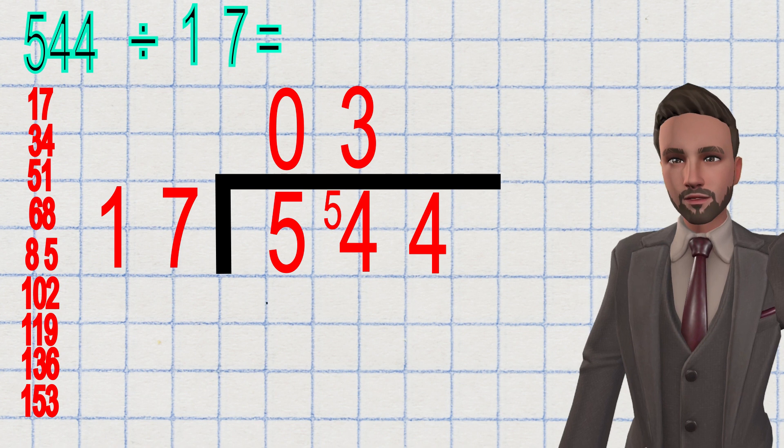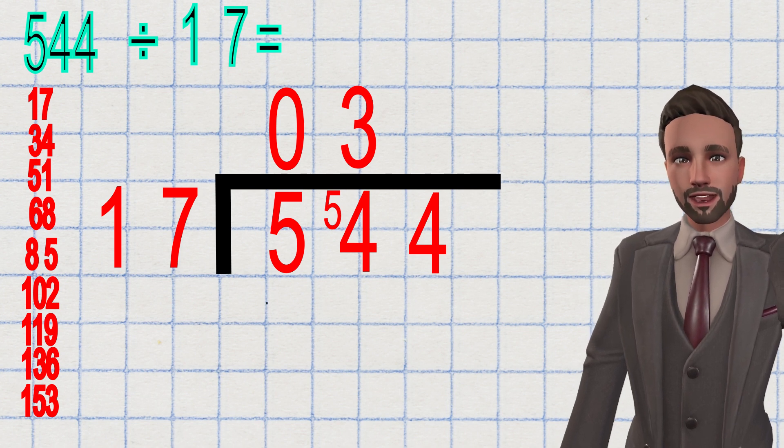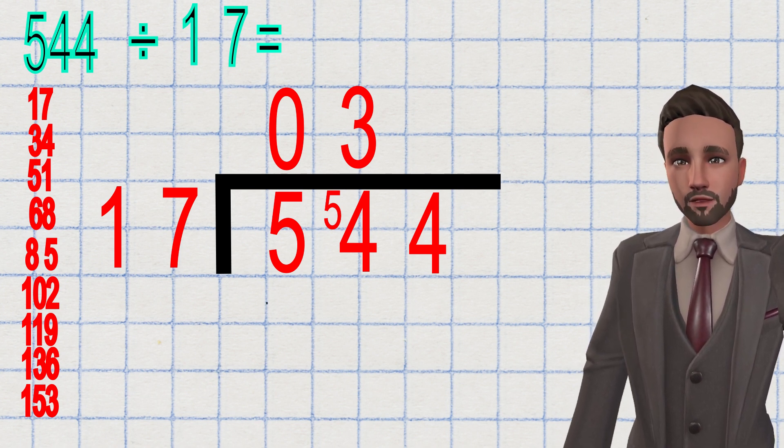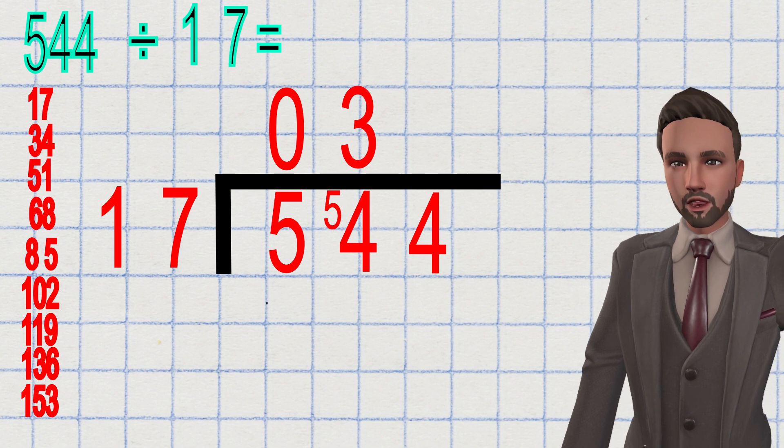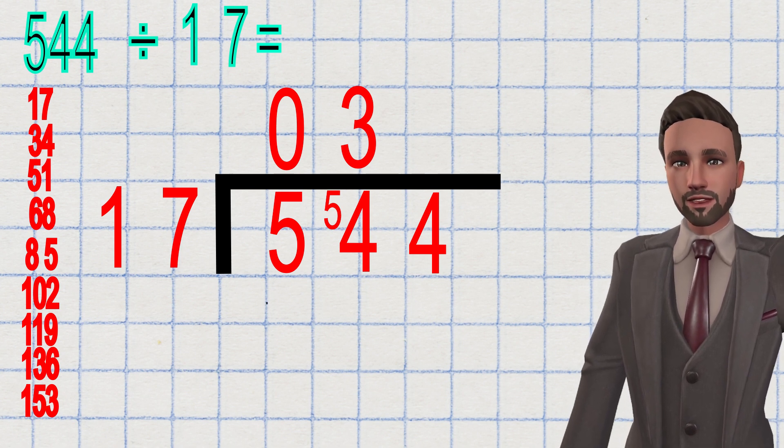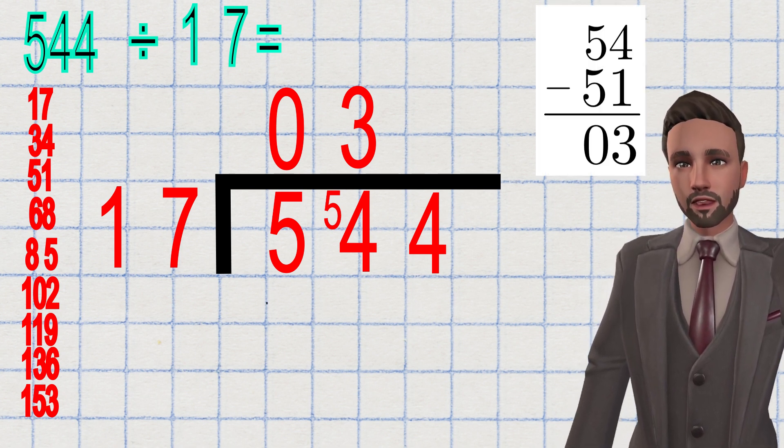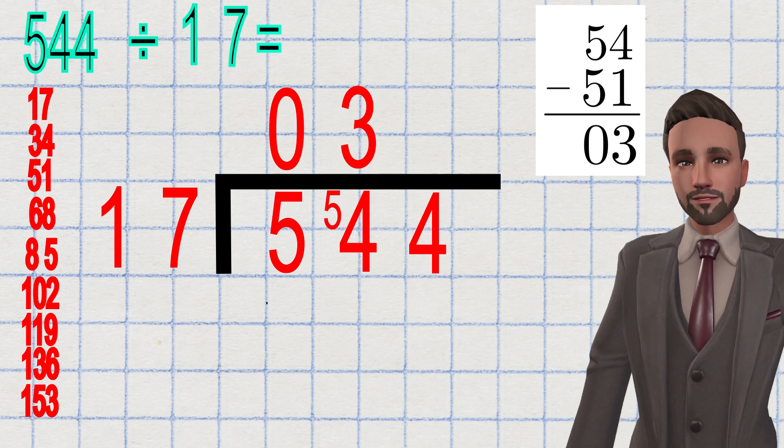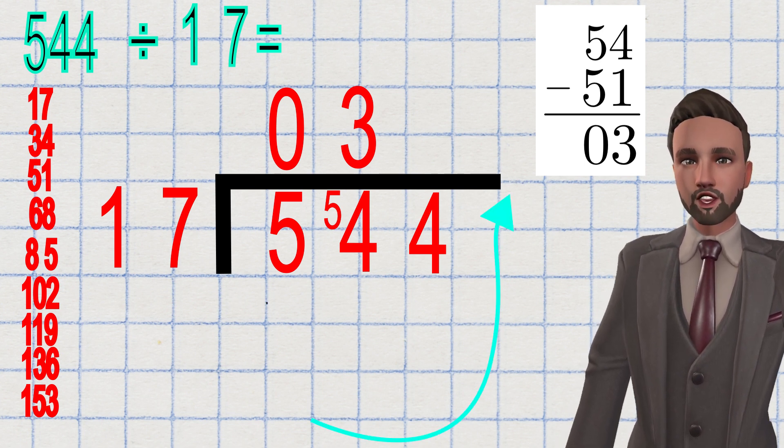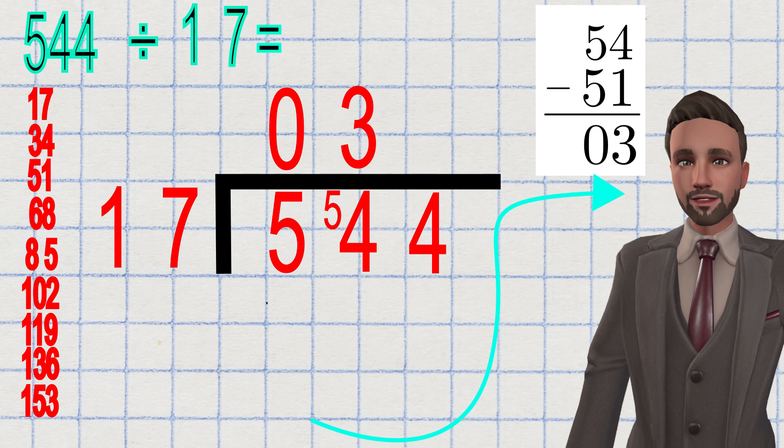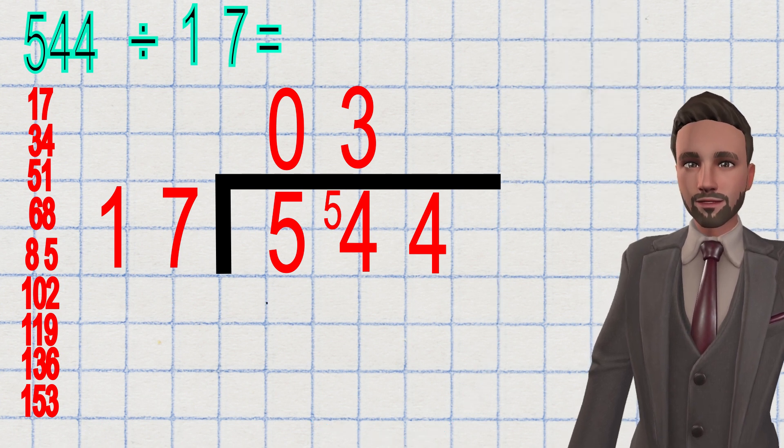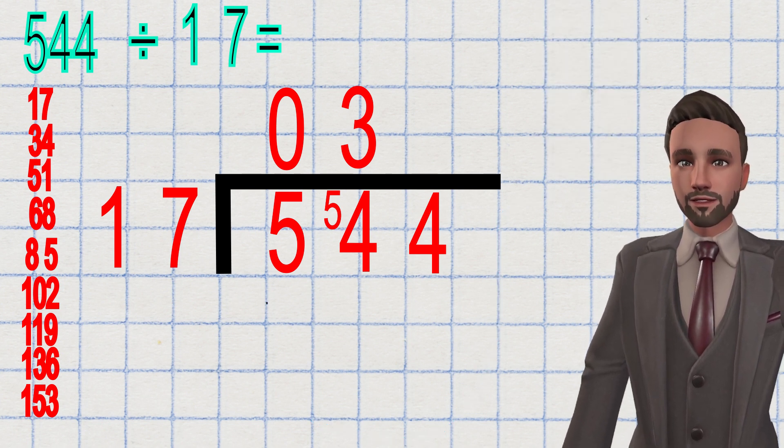I put the 3 on top, and I need to work out what I have left because I haven't used all my 54. What I do is take my 54 and subtract 51, which remains 3. Big hint: use your subtraction method here because if you don't, you might make a mistake, and often there's a bigger difference than just 3.